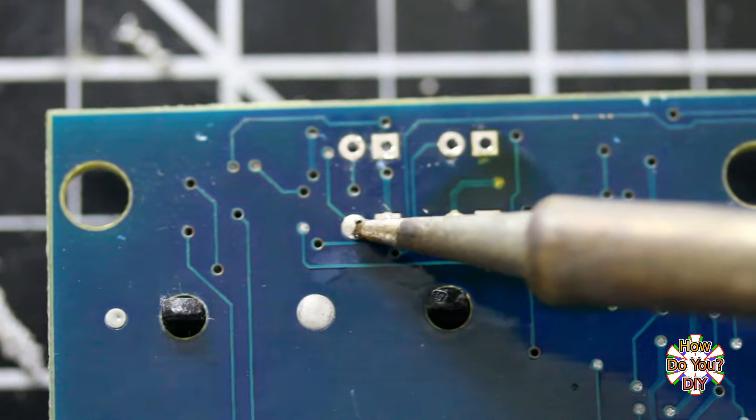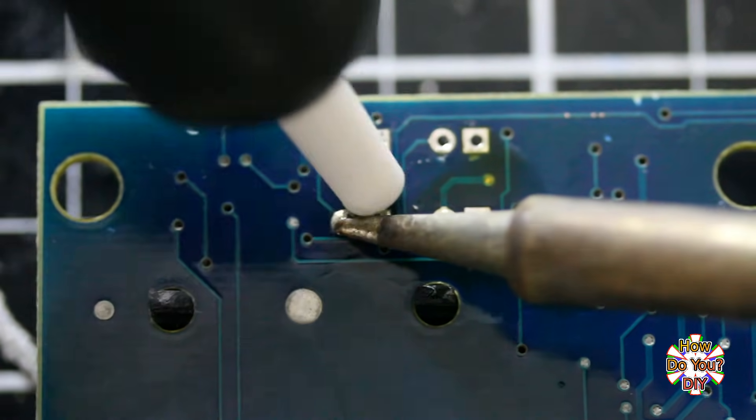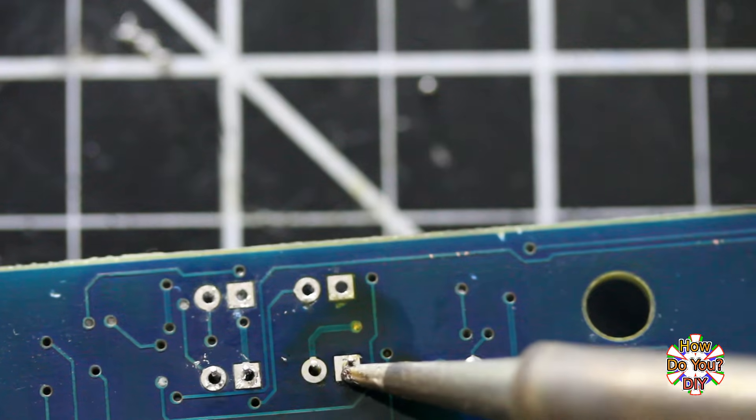Push down the plunger, melt the solder with your soldering iron, then with the tip of the solder sucker next to the solder joint, press the button. Sometimes it takes a few tries, but it works very well.